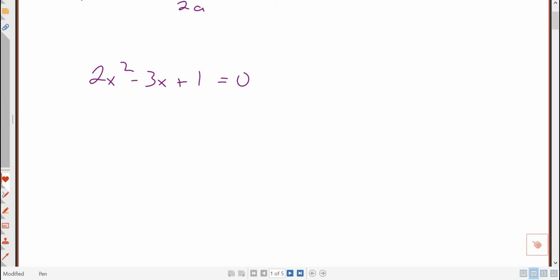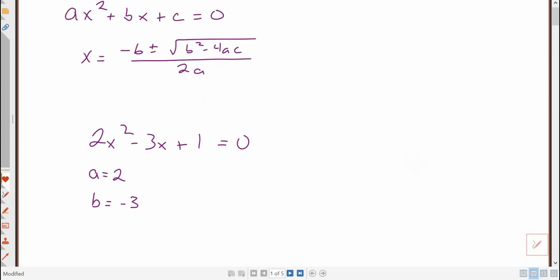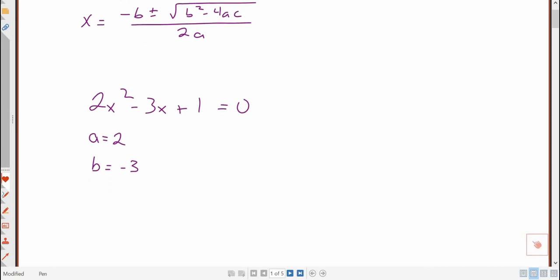So one trick that you might want to do just to help kind of organize things is actually write down what a, b, and c are. So a is the number in front of x squared, so it's 2. b is the number in front of x, but you've got to pay attention because if it's a minus sign, that's a negative, so that's a negative 3 because our formula has a plus b in it. So there's one place that people make sign errors all the time, it's forgetting about that. And then the c is equal to 1.